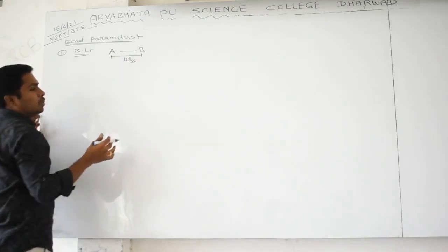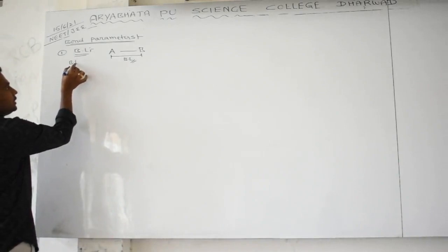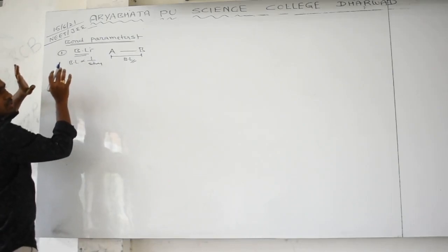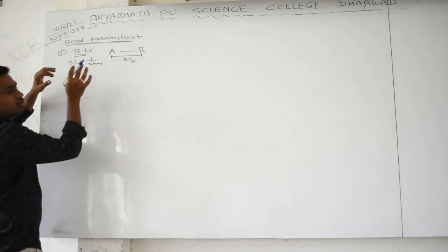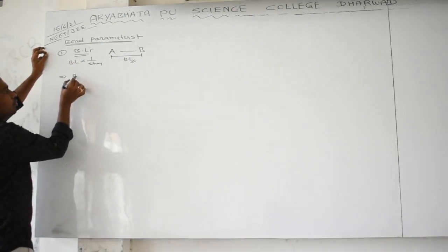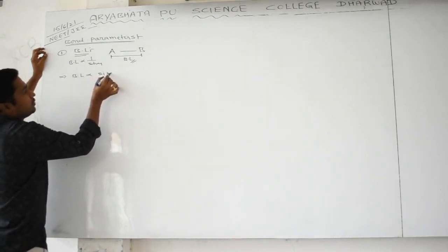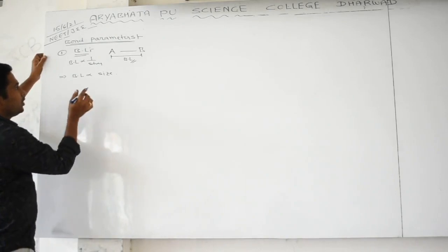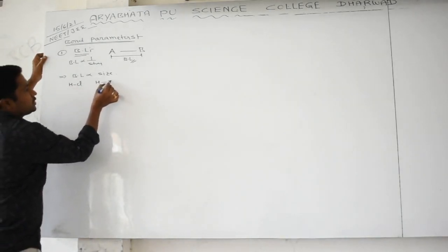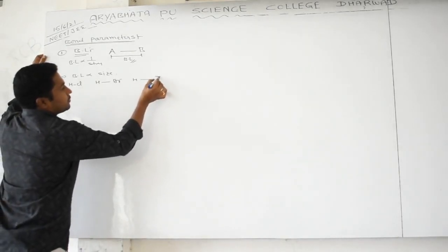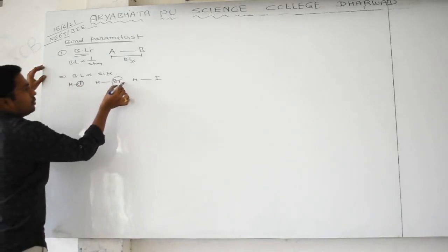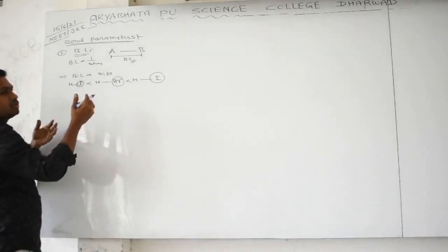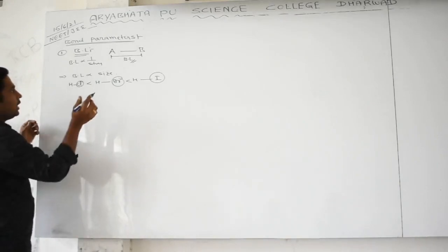Bond length is inversely proportional to stability — more bond length means a weak, unstable molecule; less bond length means a stable, strong bond. Bond length is directly proportional to atomic size. When the size of combining atoms increases, bond length also increases. For example, in HCl, HBr, and HI, the size of the bonded atom increases from Cl to Br to I, so bond length increases and bonds become weaker and less stable.